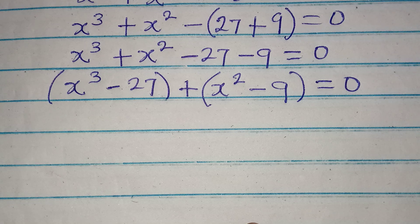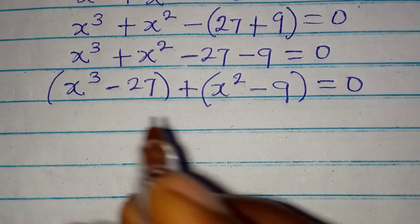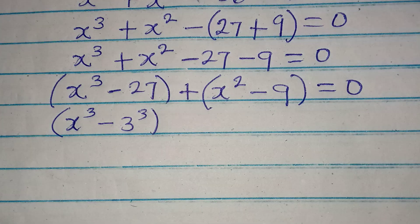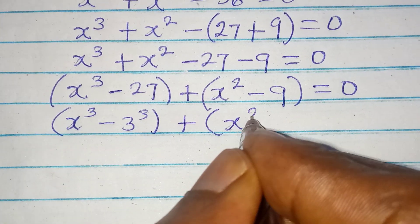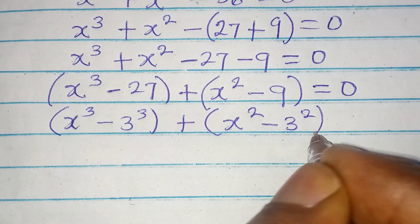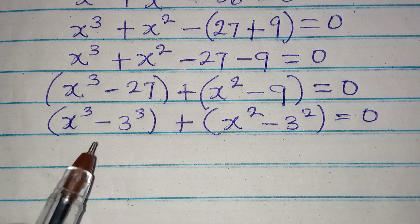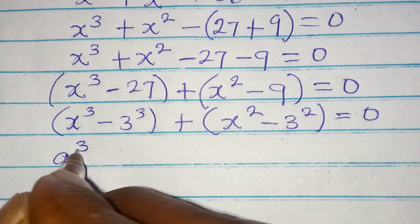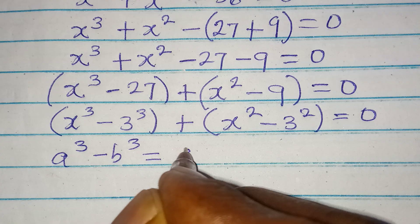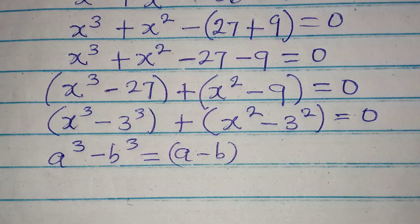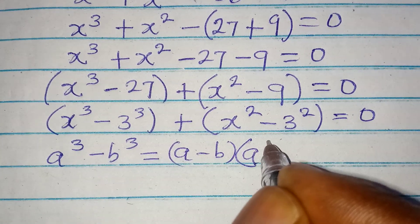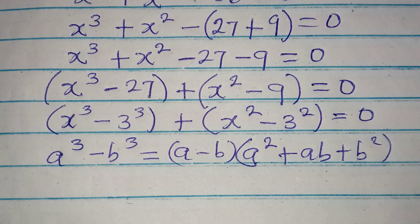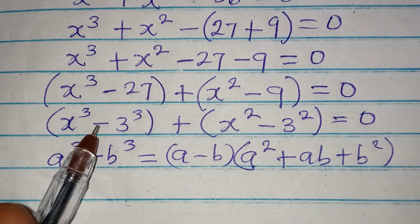From here, we can write 27 in index form. So we have x to the power of 3 minus 3 to the power of 3, then x to the power of 2 minus 3 to the power of 2, all equal to 0. We apply the standard difference of cubes formula: a to the power of 3 minus b to the power of 3 equals a minus b, then open bracket, a squared plus ab plus b squared.